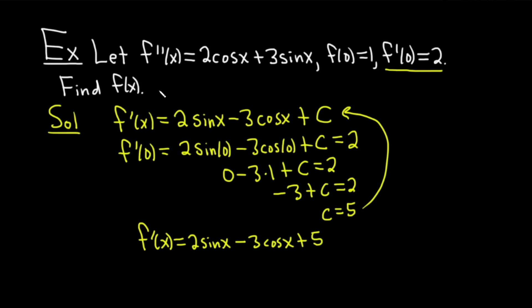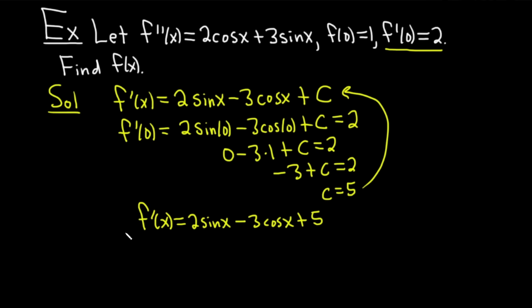Let's go over that again. First step: antidifferentiate once to get f prime — don't forget the plus C. Second step: use your condition to find C by plugging in 0 and solving. Then plug it back in. Then you repeat the process — when you antidifferentiate again, you get f, which is the answer.